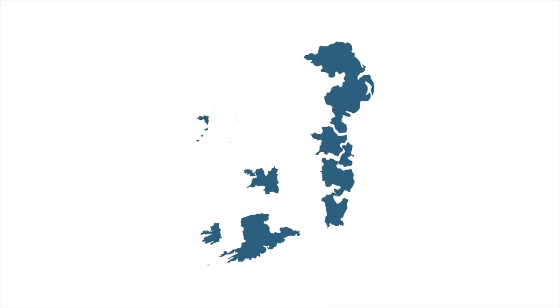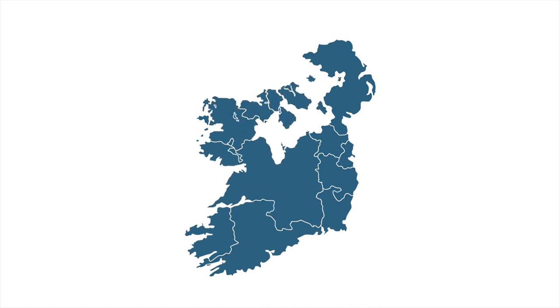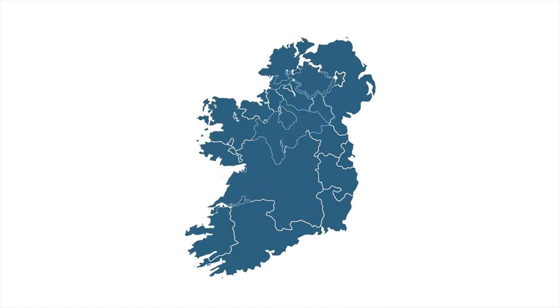The British Empire reaches its zenith, late 19th century. The late 19th century saw the British Empire reach its peak, with territories spanning the globe. This period marked England's dominance in colonial expansion, trade, and cultural influence.